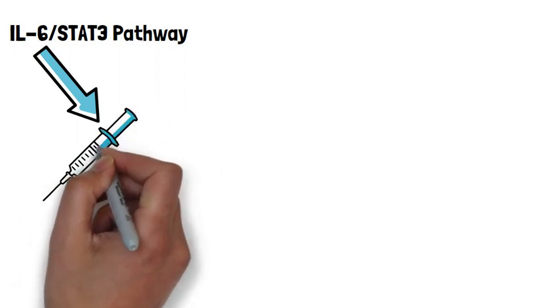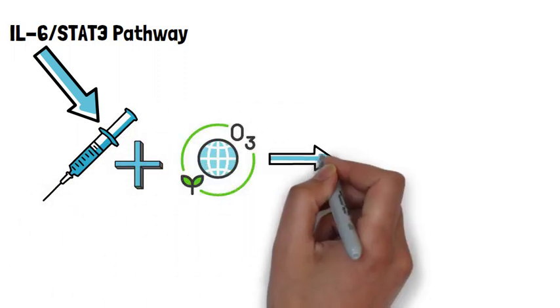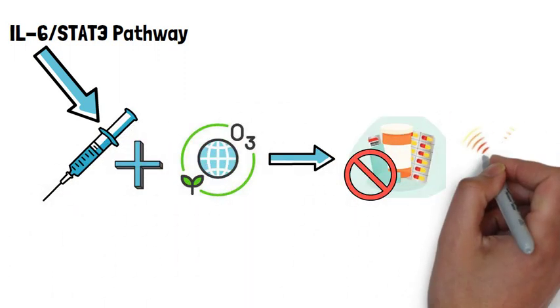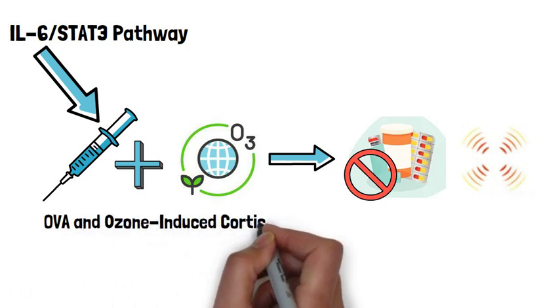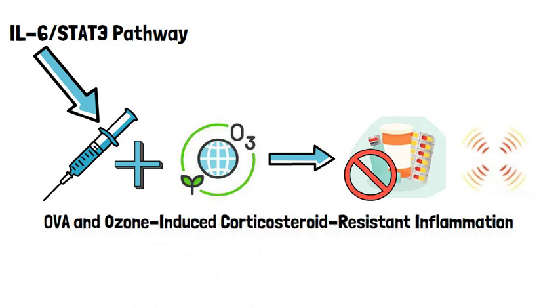This correlation suggested to researchers that the interleukin 6-STAT3 pathway may be involved in OVA and ozone-induced corticosteroid-resistant inflammation.